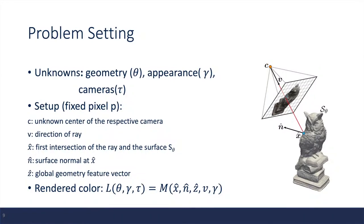Assume we have a fixed pixel p, and we shoot a ray from an unknown camera center c, and this ray has a direction of v. Eventually, this ray will hit somewhere on the surface, and we call this intersection point x̂. At the intersection point, we have a surface normal n̂. Therefore, the color of the pixel p can be approximated using rendering M.